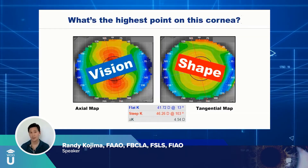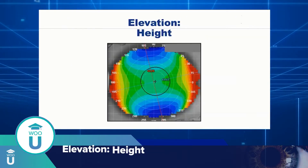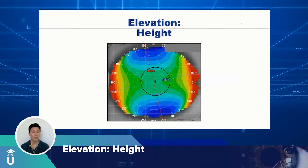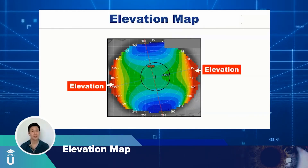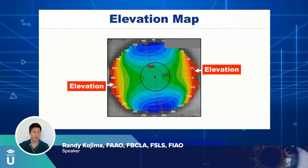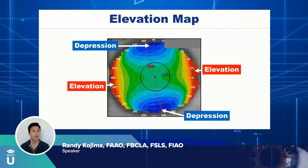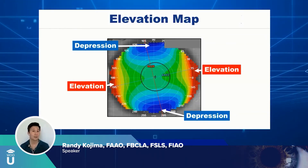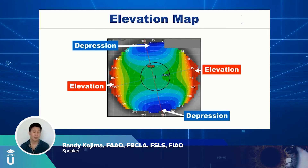Neither of these two topographies tells us about elevation — they don't tell us which is the high and which is the low. That's the elevation map. It interprets based on a spherical surface where the eye is most elevated. In the elevation map, red is the highest point. If you drop a contact lens on this patient, it will hit hardest on that red, on the highest point. The blue is where the eye is losing elevation, dropping in height. Red means bearing, blue means pooling.